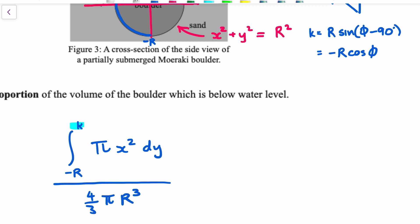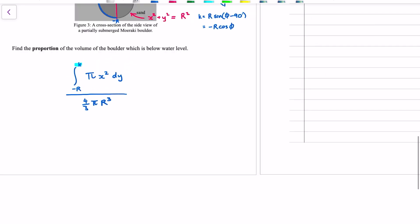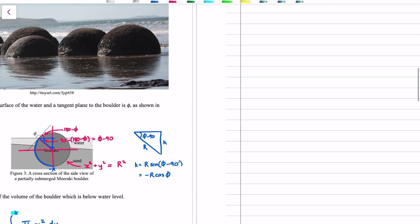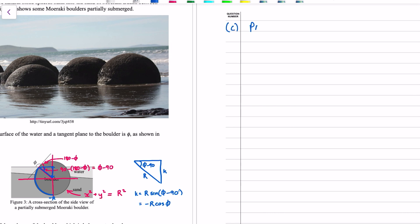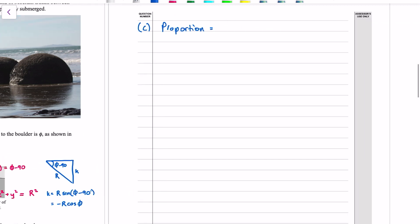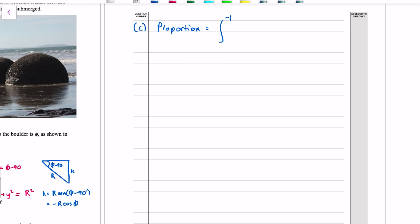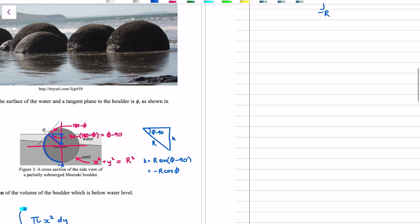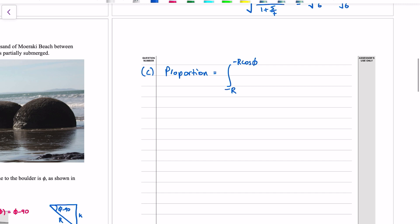So now we're integrating... well, we're integrating this thing, but the limit is -R cos(φ). Proportion equals integral from -R to -R cos(φ) of πx² dy, all divided by (4/3)πR³. The π's can cancel. And rather than dividing by 4/3, you could times by 3/4. So you've got (3/4R³) times the integral between -R and -R cos(φ) of x².